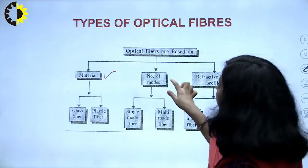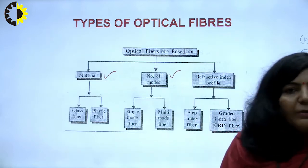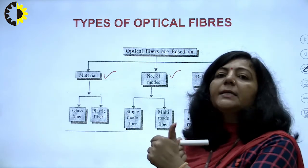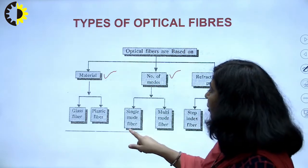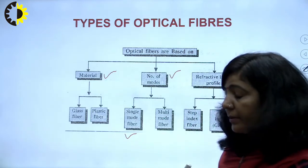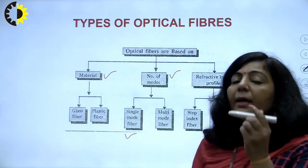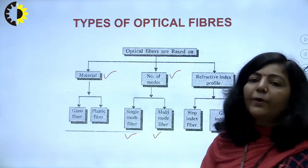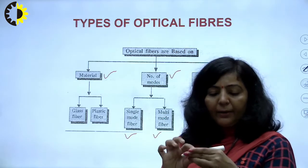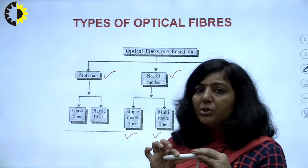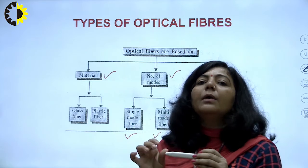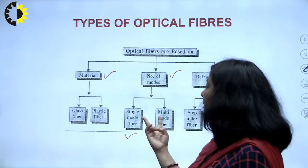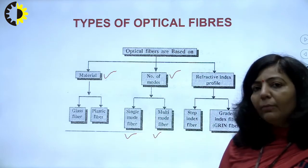The second criteria is number of modes. If only a single light ray is traveling from transmitter to receiver, then that type of fiber is known as a single mode fiber. Multi-mode fiber means a large number of light rays can enter into the fiber and travel from transmitter to receiver. So depending upon number of modes, you have two groups: single mode and multi-mode.